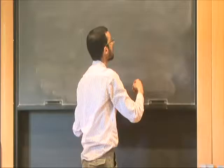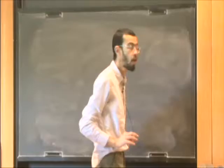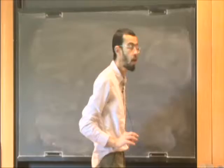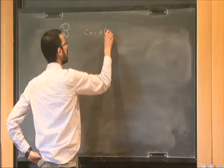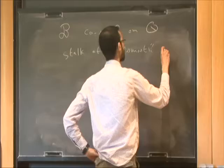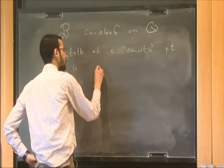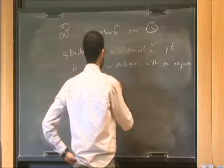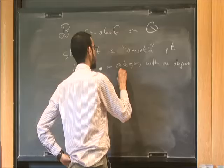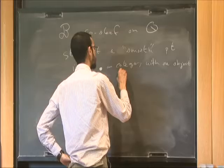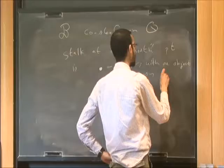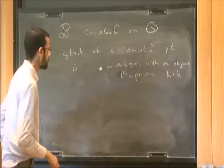If we just ignore X for a moment and just have this ribbon graph, then we can construct a co-sheaf of A∞ categories. So B will be this co-sheaf on Q, and the stalk at a smooth point — by smooth point I mean something that's not a vertex — is the category with one object. The endomorphism algebra of this object: there's only one morphism, up to scalar multiplication, which is K times the identity. That's my ground field.